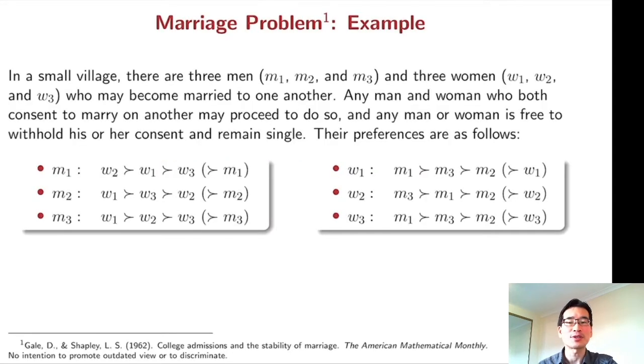In a small village, there are three men and three women. They want to get married to one another. Each man has a preference over the three women and himself. For instance, M1 likes W2 the most, then W1, then W3 the least, but still better than M1, which means remaining single.